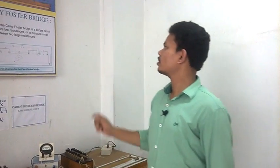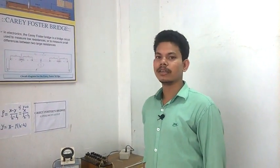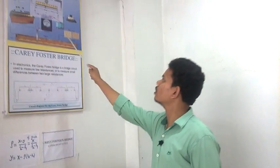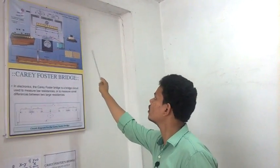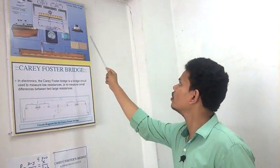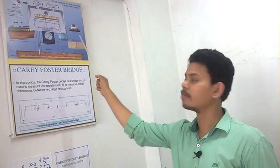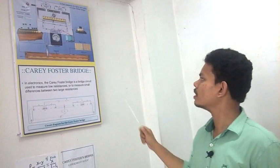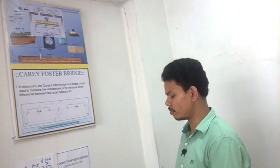Hi, this is a Carey Foster Bridge experiment. We know these are the basic principles. We know in Wheatstone bridge P by Q equals R by S. This is the basic principle to use in this experiment.